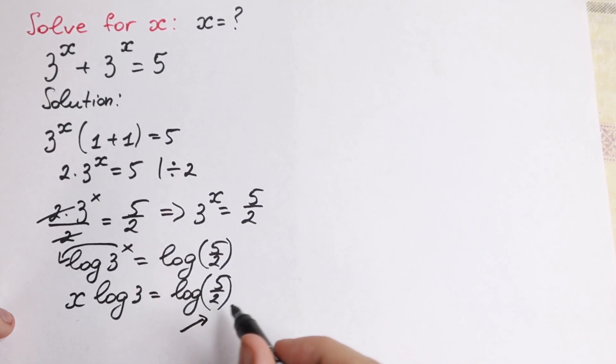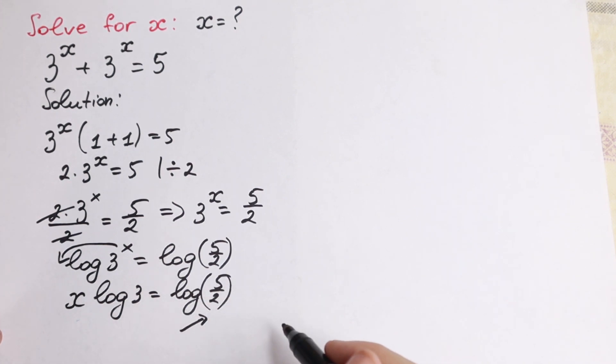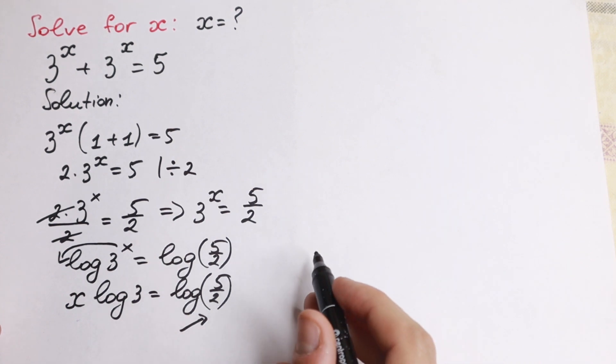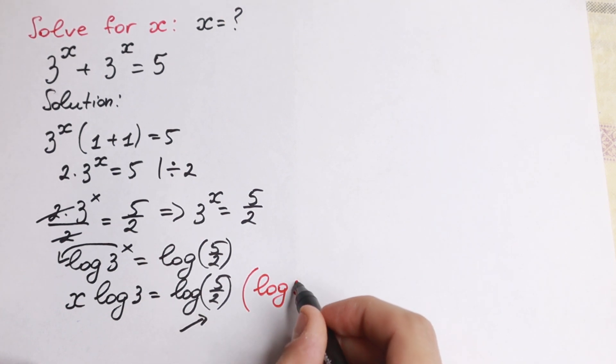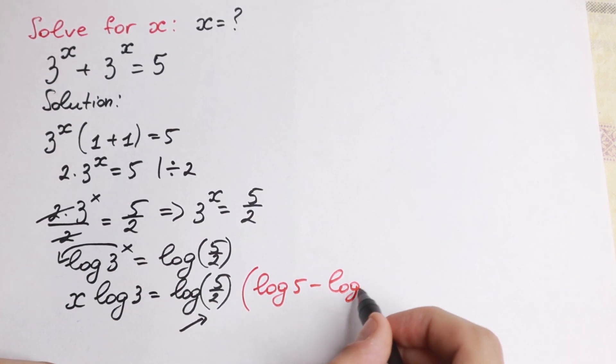And moreover, we need to know the rule. If we have a fraction right here, so if we have numerator and denominator, we can easily write it using a subtraction. So right here we can easily write it as log 5 minus log 2.